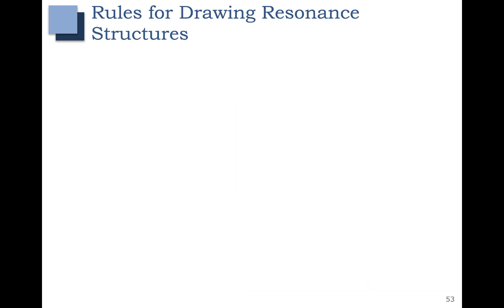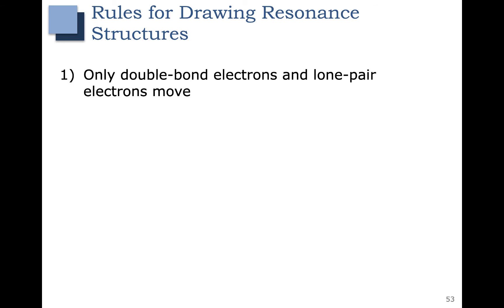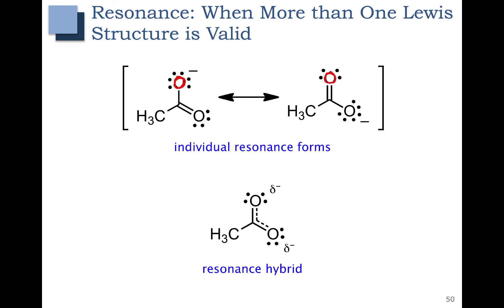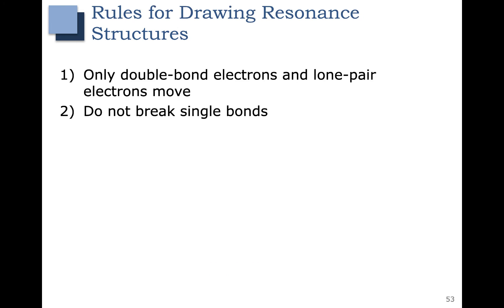Let's go over some rules for drawing resonance structures. When moving electrons around to get to a different resonance structure, we can only move double bond electrons and lone pair electrons. In the first example, we were taking one of these lone pairs and moving it down to become a double bond, then taking a double bond and moving it over. We didn't move any electrons that were in single bonds. When drawing resonance structures, it's okay to move lone pairs and double bonds, but we do not move single bonds. Rule two: do not break single bonds.